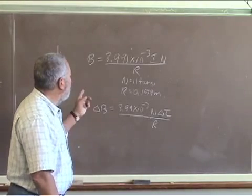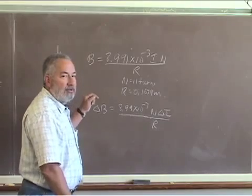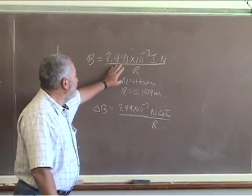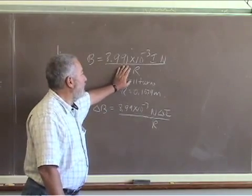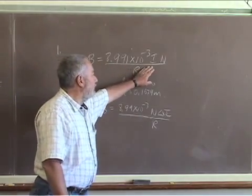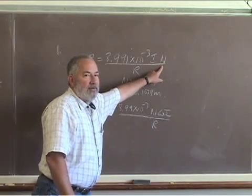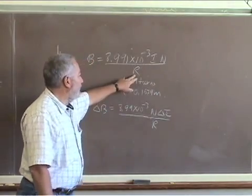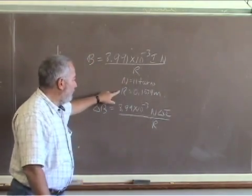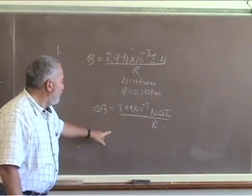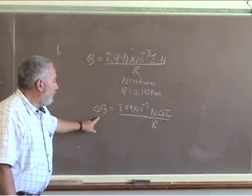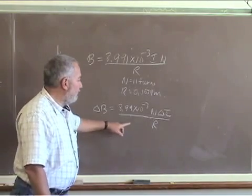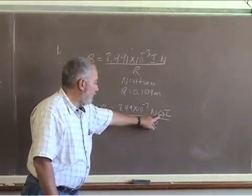Step one: we calculate the B field using this equation. The B field is equal to a constant times the current through the coils. This accounts for the number of turns of coils we have and the radius given by these two numbers. We calculate the uncertainty of the B field by using the uncertainty of the current.